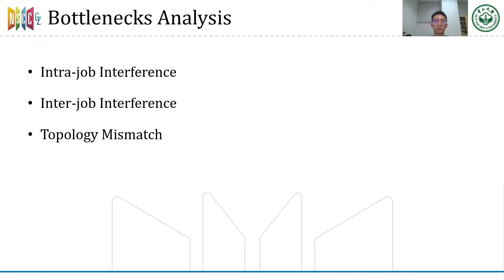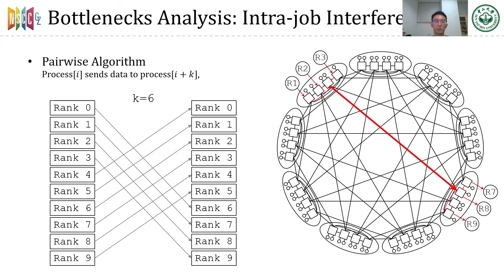Let's analyze the bottlenecks of these algorithms in Dragonfly topology. The first is intra-job interference. The pairwise algorithm used in all-to-all and reduce-scatter operations can cause intra-job interference. In each step of pairwise, the rank differences between any communication pair are the same, shown as parallel lines in the figure. Ranks 1, 2, and 3 are sending messages to ranks 7, 8, and 9 respectively, sharing a common global link which is in congestion. In the worst case, completion time will be three times longer with minimal routing. With adaptive routing, many packets have to traverse through non-minimal paths.